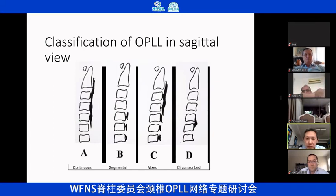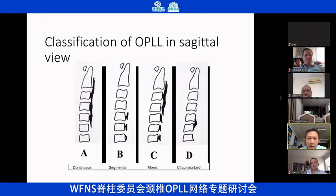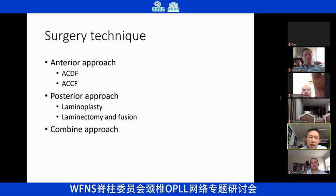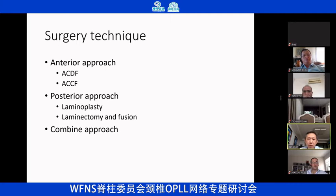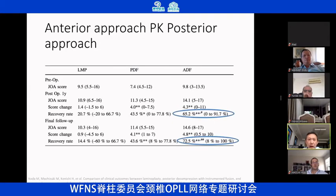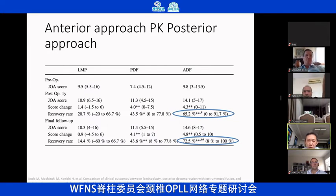On CT scan, we can divide this kind of disease into four types. If the patient has severe symptoms, the only useful treatment may be surgery. For different types of patients, we may choose an anterior approach, a posterior approach, or in very complicated cases, a combined approach. Comparing anterior and posterior approaches, you'll find that the anterior approach gives patients a better cure rate and also a better recovery rate at follow-up.